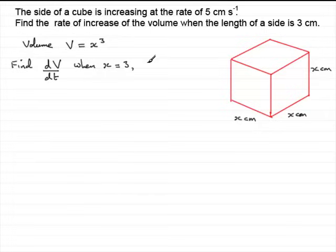And what are we given? You're always going to find in these questions you're given something. We're given that the side of the cube is increasing at a rate of 5 cm per second. So what does that mean?